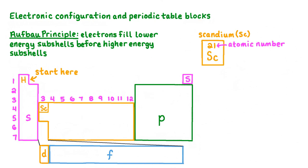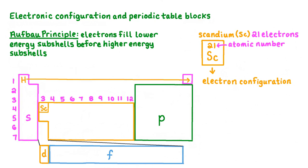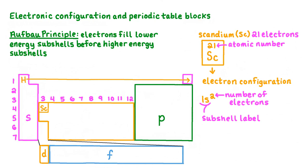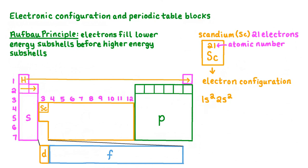Scandium has an atomic number of 21, which means that a scandium atom has a total of 21 electrons. To write the electron configuration of scandium, let's begin at hydrogen and move across period 1 of the periodic table, which represents the 1s subshell. Every time we move to a new element, we add another electron to the subshell, so we will need to fill the 1s subshell with 2 electrons. When writing the electron configuration, we start each part with the subshell label and use a superscript to indicate the number of electrons in the subshell. Moving into period 2, we fill the 2s subshell with 2 electrons and the 2p subshell with 6 electrons.